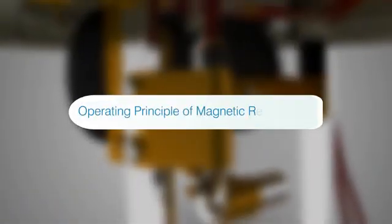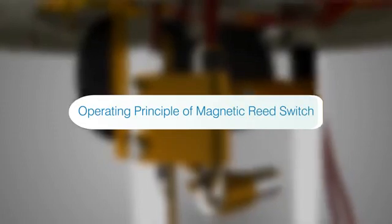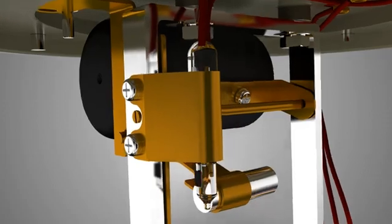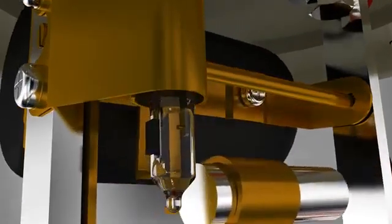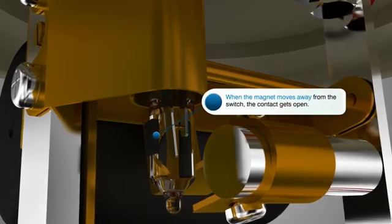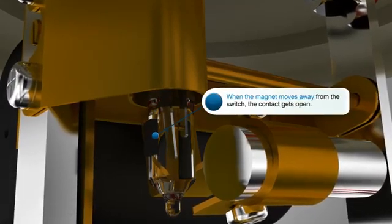Operating principle of magnetic reed switch: The switch is operated by a permanent magnet. When a magnet approaches the switch, the reeds close the circuit. When the magnets move away from the switch, the contact gets open.